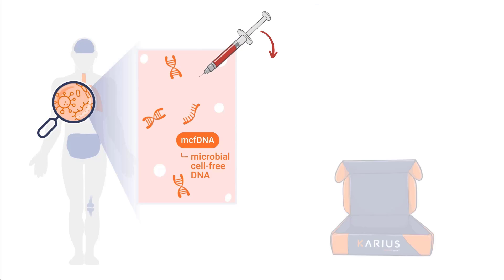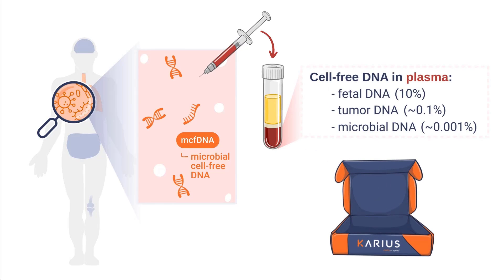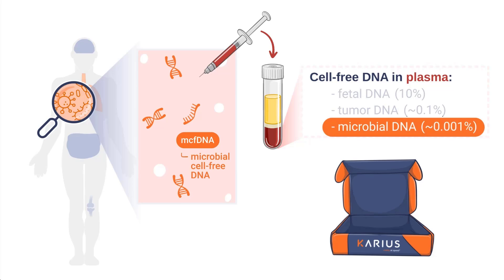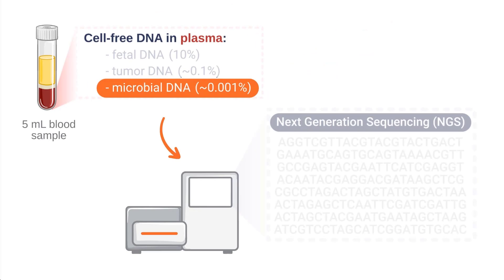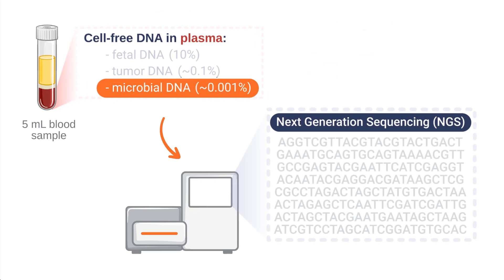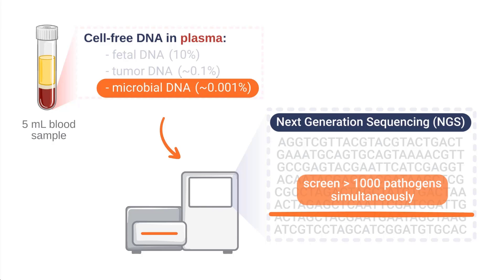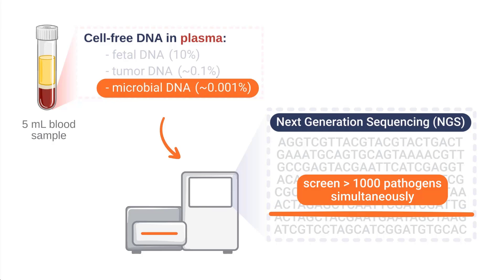The Karius test isolates the MCF DNA, which makes up about 0.001% of the total cell-free DNA in plasma, and sequences it using next-generation sequencing. The sequenced MCF DNA is then entered into a large database of pathogen genomes. The result: the Karius test can screen for over 1,000 pathogens simultaneously, using only one 5-milliliter blood sample.